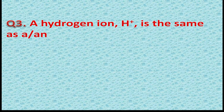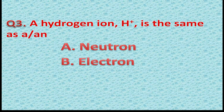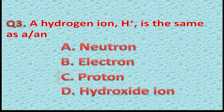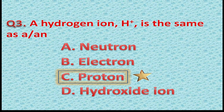Question 3: A hydrogen ion H+ is the same as — Option A: a neutron. Option B: an electron. Option C: a proton. Option D: a hydroxide ion. The correct answer is Option C — proton. If you gave this answer, add 1 star to your score.